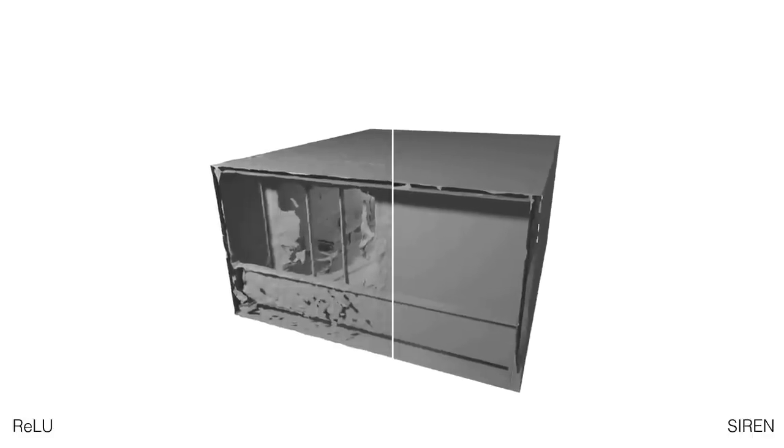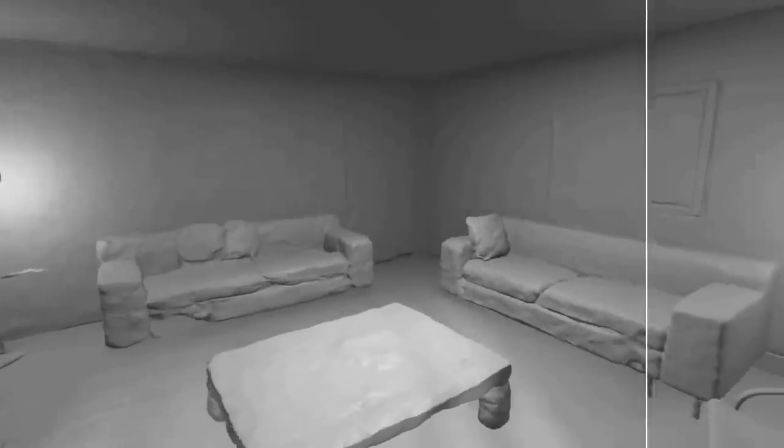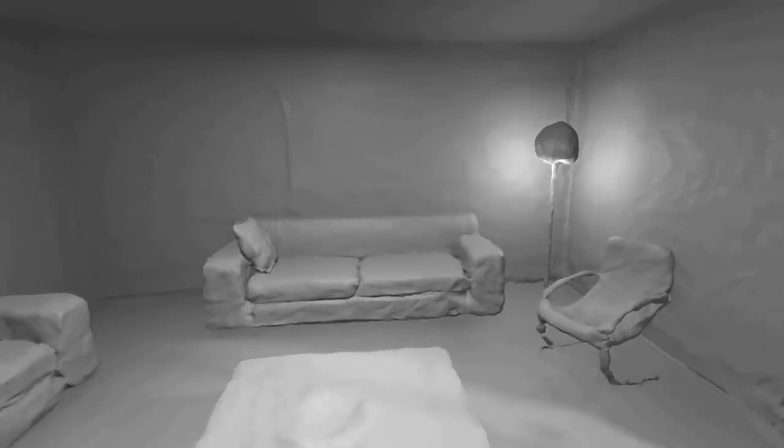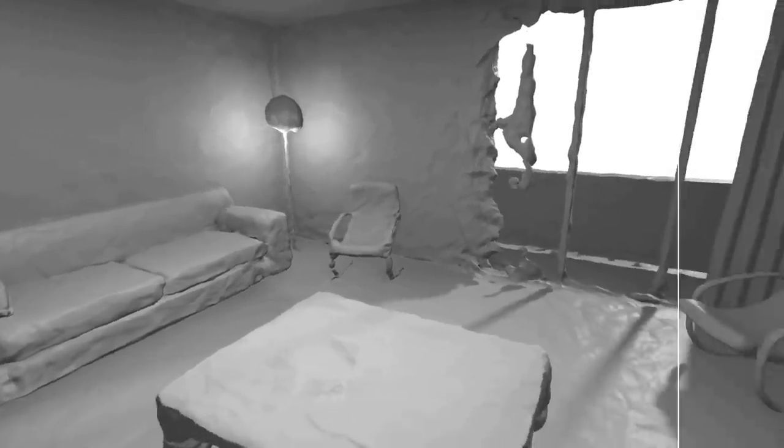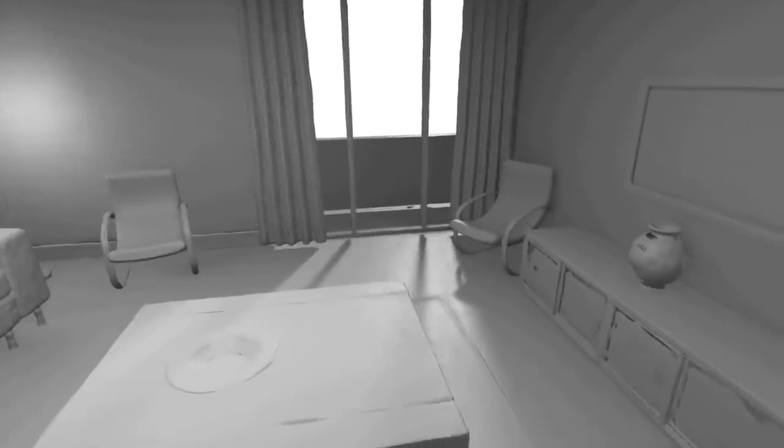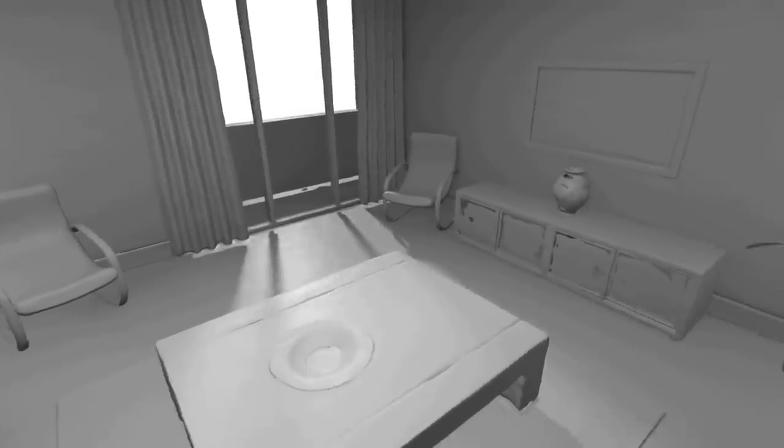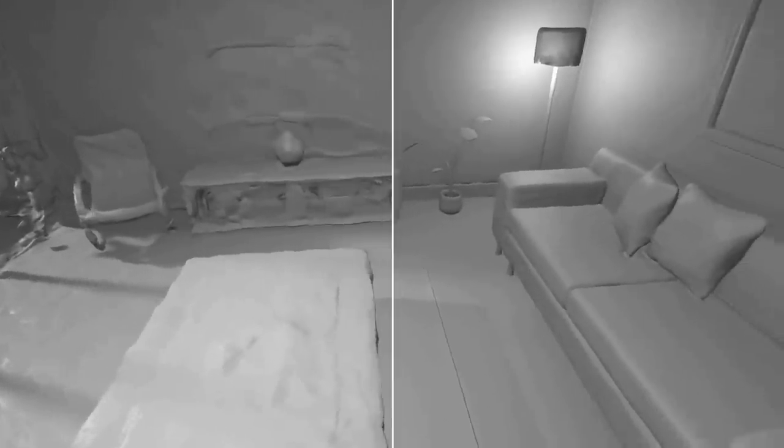A single fully connected SIREN with 5 layers and 1024 hidden units may also faithfully represent a full-scale room, while a ReLU network fails to faithfully reconstruct the room, as illustrated by the inability to fit the curtains, the bowl on the table, or the feet of the sofas.